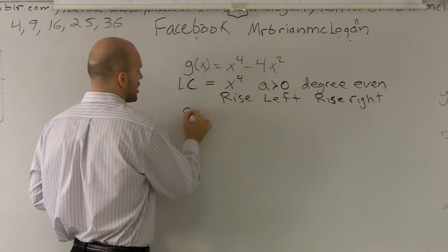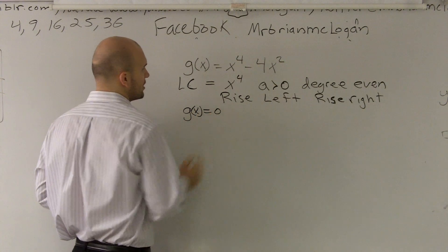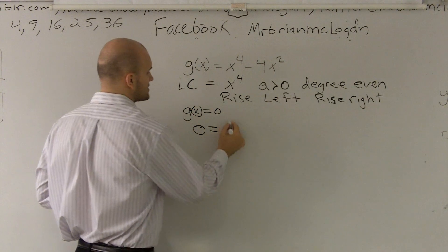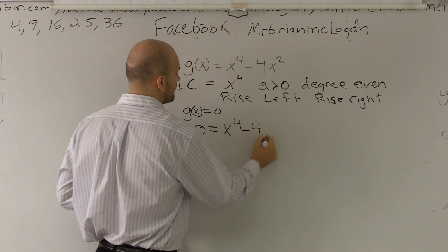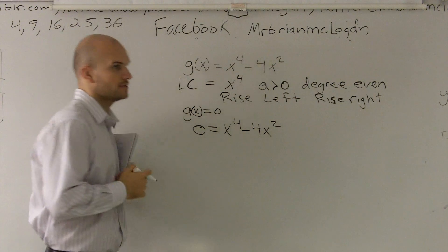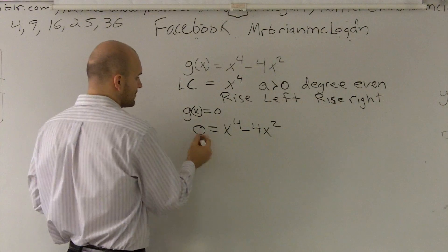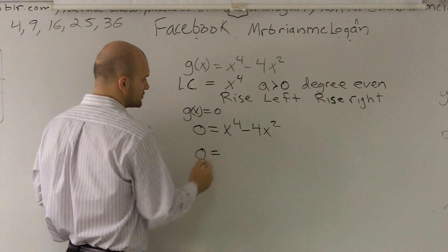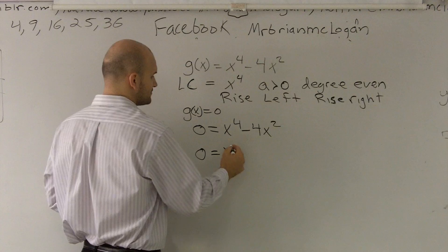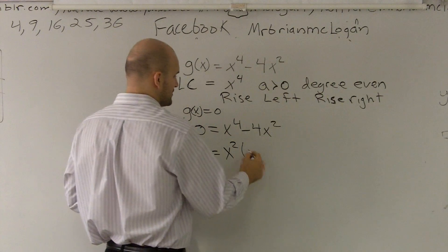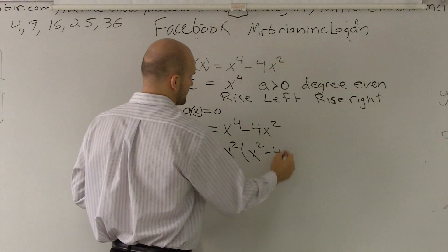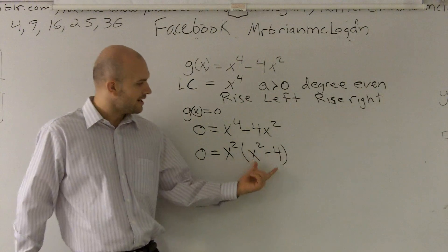Remember, our zeros are when g of x equals 0. So I'm going to say 0 equals x to the 4 minus 4x squared. Working on my factoring, first thing I want to do is always factor out common terms. I can factor out an x squared. And that's going to leave me with x squared minus 4.